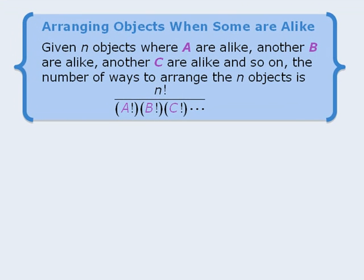The rule says that if we have n objects where A of them are alike, another B of them are alike, another C of them are alike, and so on, then the total number of arrangements is equal to n factorial over A factorial times B factorial times C factorial, and so on.